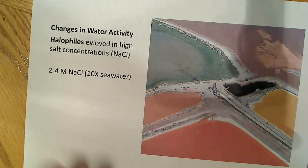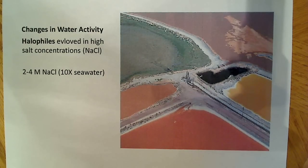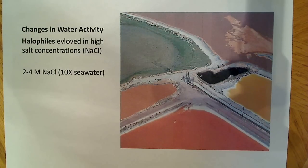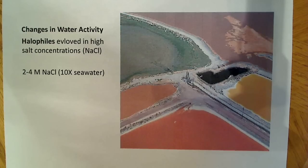The last topic is changes in water activity. Halophiles evolved in high salt concentrations — high NaCl. Salt water has a high concentration, but these organisms live in conditions far higher than that: 2 to 4 moles of NaCl, which is about 10 times that of seawater. The reddish color visible here is due to their activity.